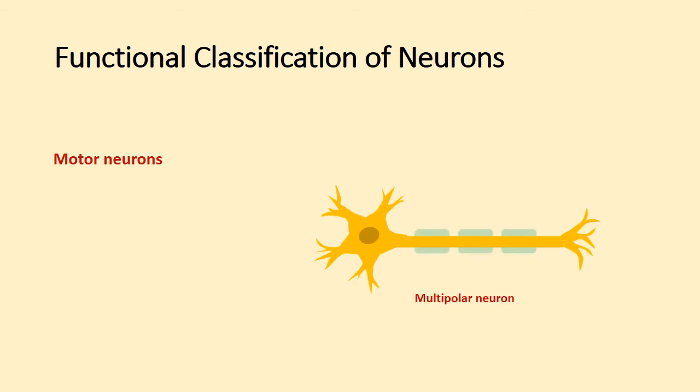Motor neurons, also known as efferent neurons, transmit signals from the central nervous system to muscles, organs, and glands.